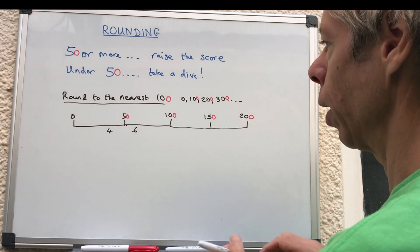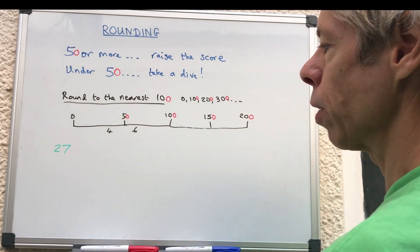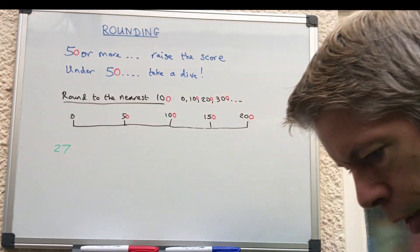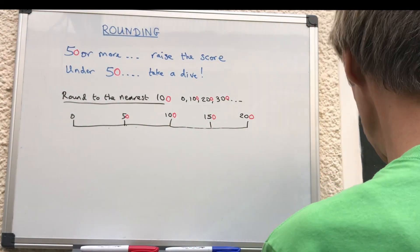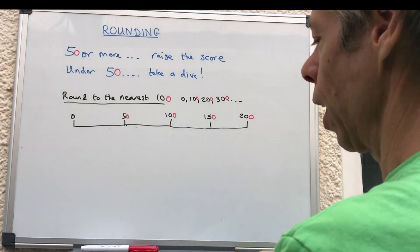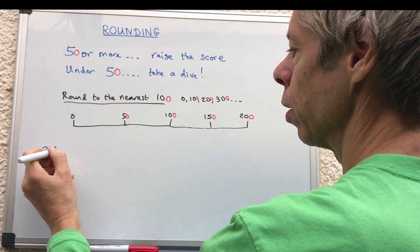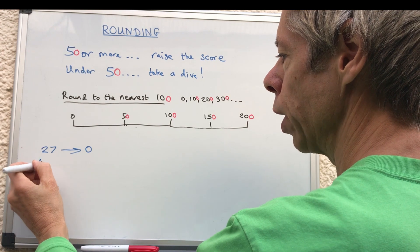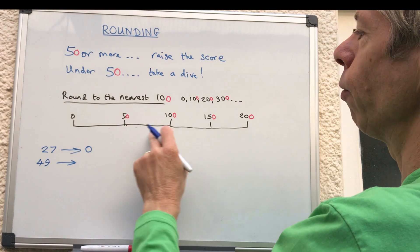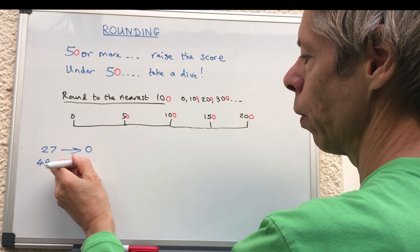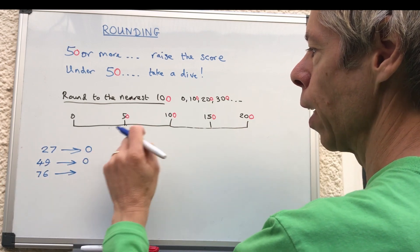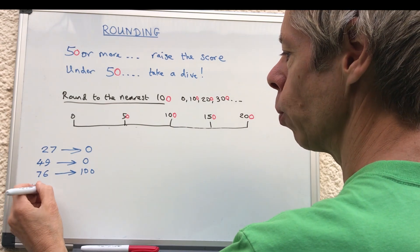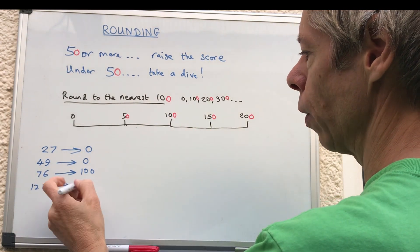So just throw out a random number. Let's throw out 27. Right, so 27 is in this block, so it's below. So we had 27. So 27 is clearly here, so that would go down to zero. If we had 49, some people make the mistake of rounding that up to 50 and then rounding up to 100, but it's under 50, so that would also go to zero. If we had 76, then that would go, it's clearly in this zone, so it goes up to 100. Right, if we had 121, that's clearly in this zone, so it'll go back down to 100.